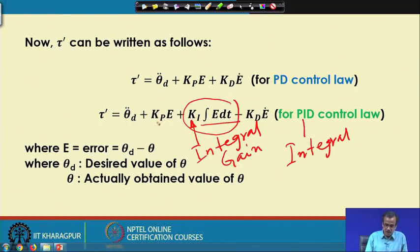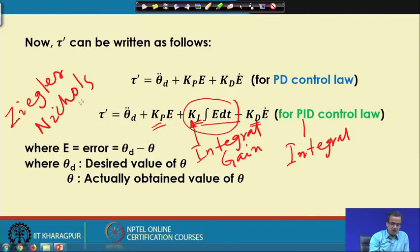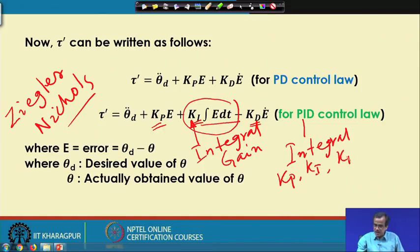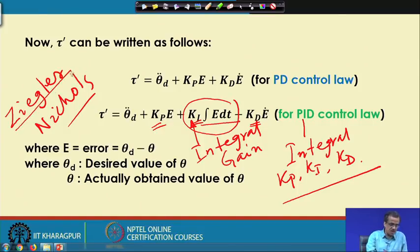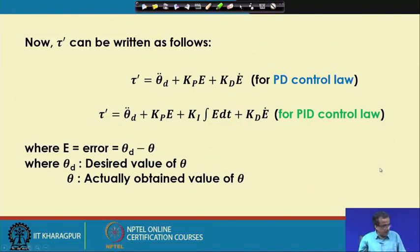The values for Kp, Ki, and Kd can be determined mathematically using a well-known method called the Ziegler-Nichols rule. Using this rule, we can find out what the numerical values should be for Kp, Ki, and Kd. Once these values are determined, they are kept constant and not altered. Once we have those gain values, we can implement this particular tau-prime.